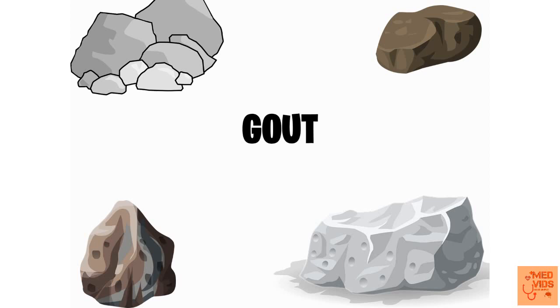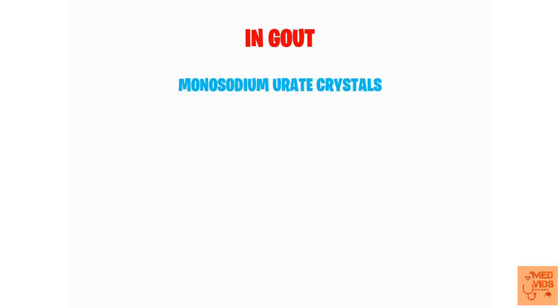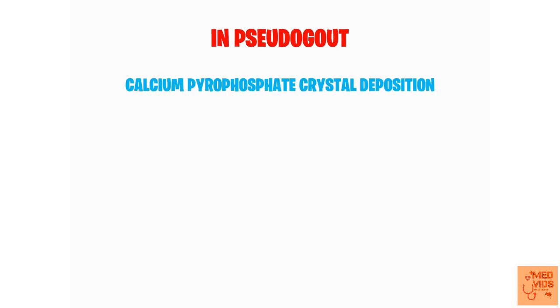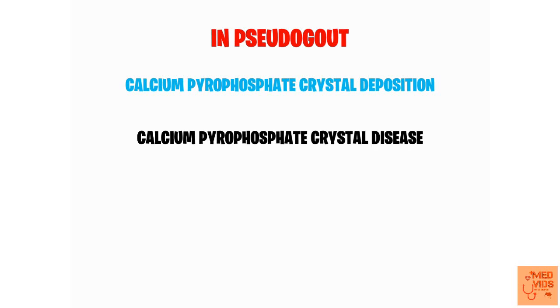I already made a video on gout and the link will be provided at the end of this video. The basic difference between gout and pseudogout is the nature of crystals deposited in the joints. In gout, the crystals are monosodium urate crystals, whereas in pseudogout, the crystals deposited are calcium pyrophosphate crystals. The actual name of pseudogout is calcium pyrophosphate crystal disease, because of the crystals deposited in the joints. Remember that calcium pyrophosphate crystal disease and pseudogout can be used interchangeably.